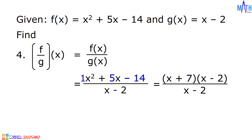Cancel out the common factor, which is x minus 2, and we are left with x plus 7. And this is the quotient. And that is how to add, subtract, multiply, and divide functions.